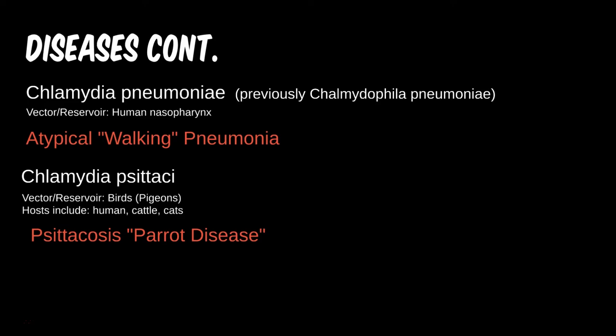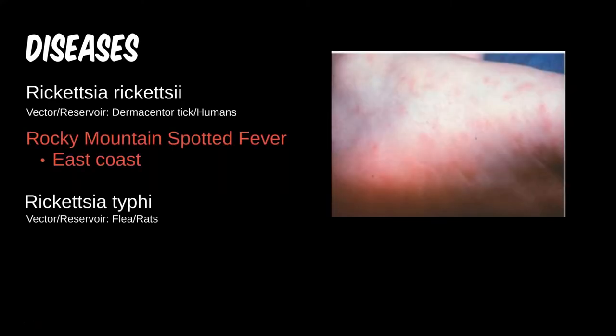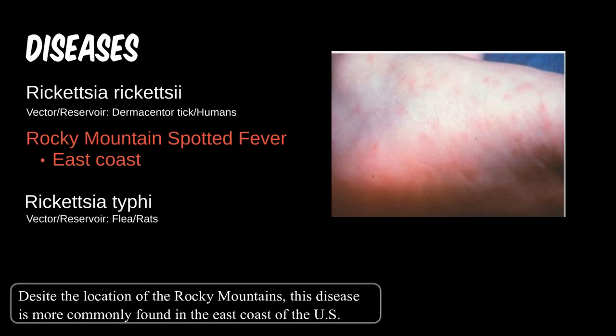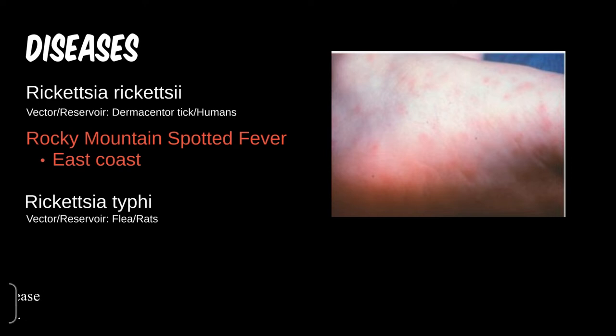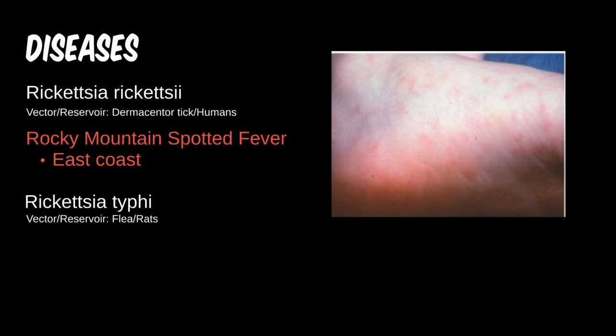The first of the Rickettsiaceae family is Rickettsia rickettsii, which has a very distinct disease associated with it: Rocky Mountain Spotted Fever. This tick-borne illness most often starts with vague sick symptoms and a petechial rash, though about 10% of people don't have a rash or present several days after the rash has resolved. Later disease can lead to respiratory failure, limb necrosis and amputation, and other organ failures. Not catching this early can be fatal, so a thorough history is critical.